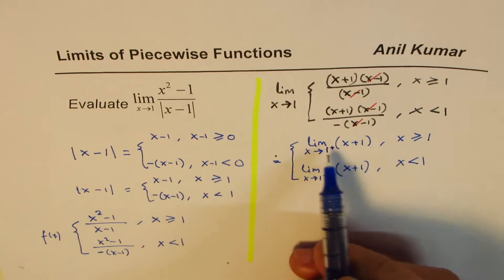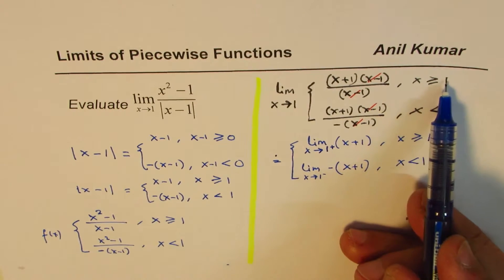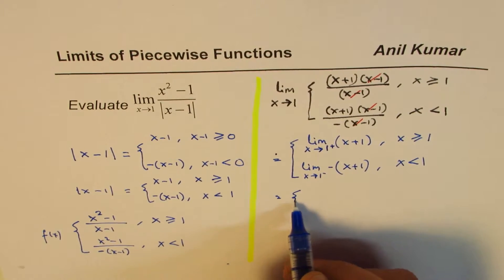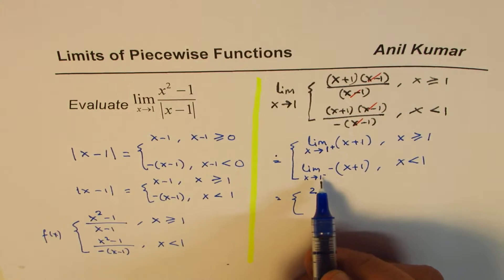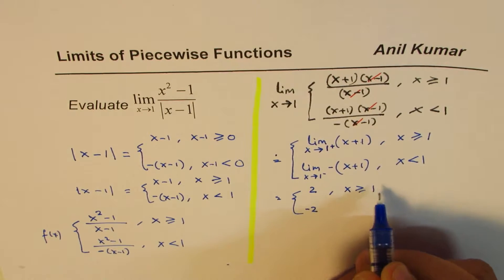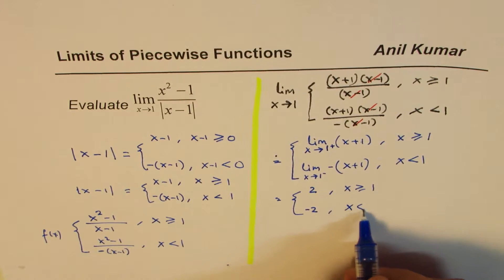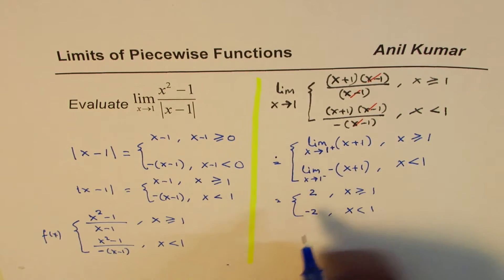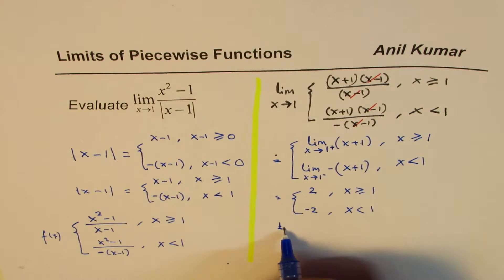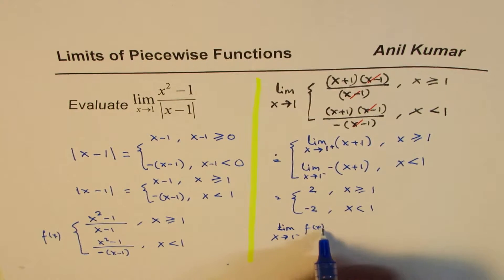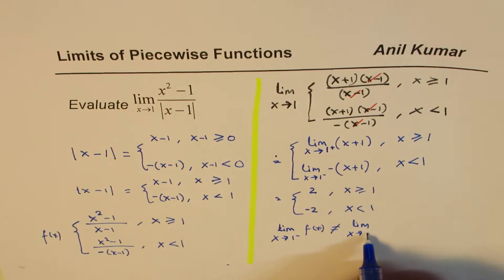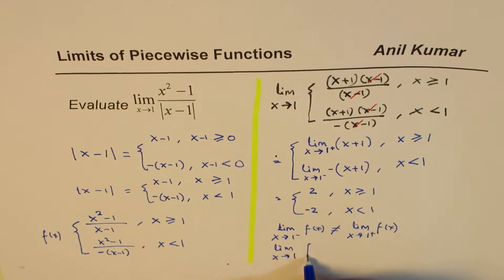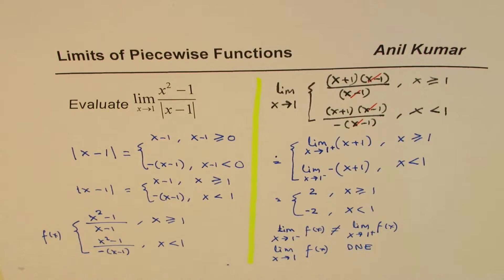When we say positive side, that is when x is greater than or equal to 1 — that branch of the piecewise function. This is from the negative side. If I substitute 1 into x plus 1, I get 1 plus 1 equals 2. On the other hand, if I substitute 1 into minus x plus 1, I get minus 2. So approaching from the right side gives 2, and from the left side gives minus 2. Since the left-hand limit of f(x) as x approaches 1 is not equal to the right-hand limit as x approaches 1, the limit of the function as x approaches 1 does not exist.